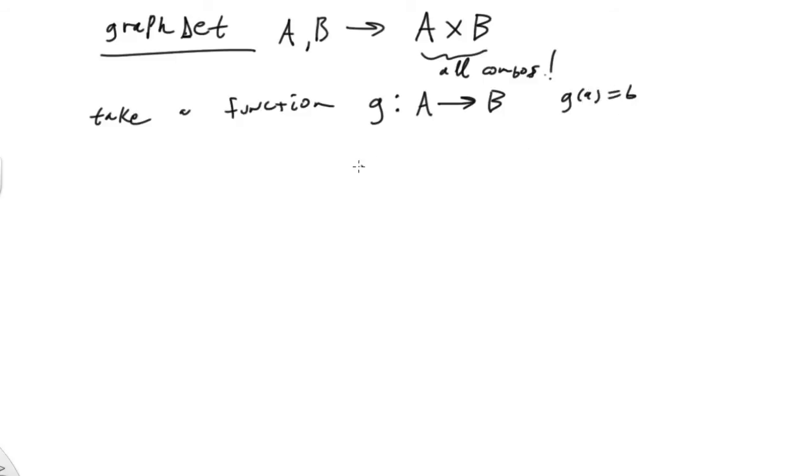And the idea here is that now what we want to define now is, so G is this abstract pairing, but we can actually now define G to be a subset of the Cartesian product. And it's going to be equal to the set of all points A comma B such that A is an element of capital A and B is equal to G of A.